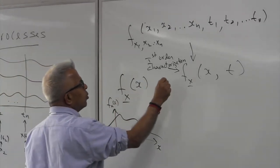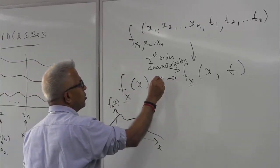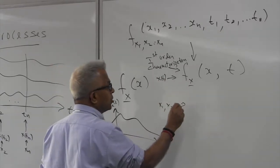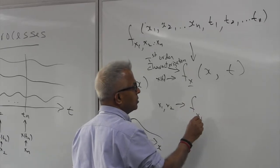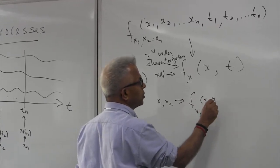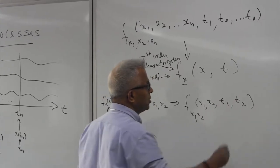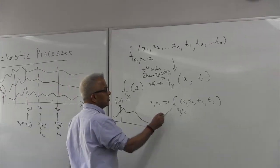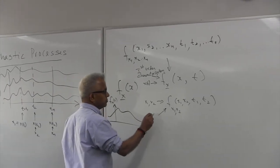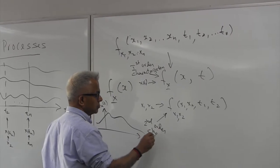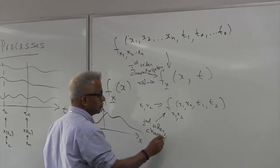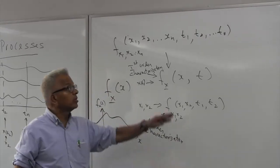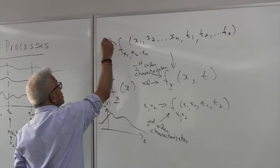This is dealing with one random variable — just x of t1, or x1. We could also deal with two random variables x1 and x2, which gives us the second order characterization: x1 corresponding to time instant t1 and x2 corresponding to time instant t2. Of course you can go to third order, fourth order — in general this is the nth order characterization.